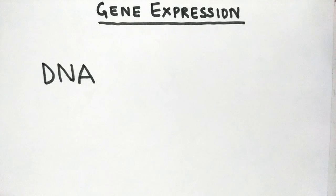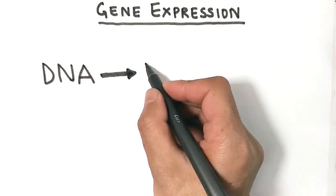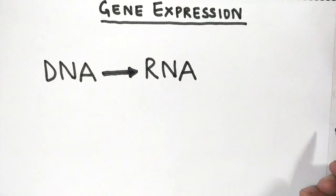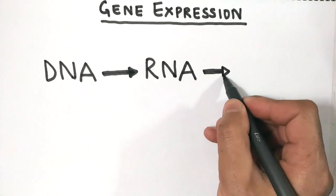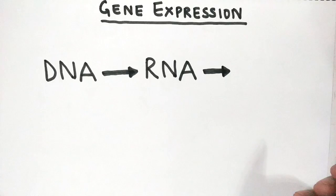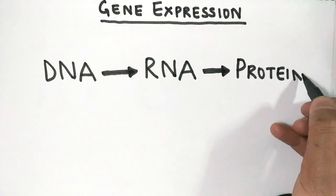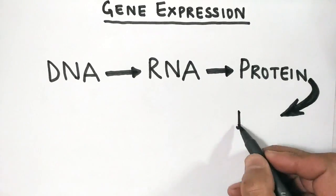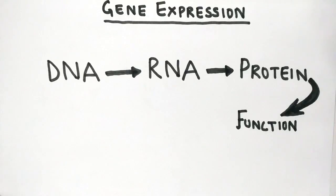This information present on DNA gets transferred to a molecule called RNA through a process called transcription, which we are going to discuss later. This RNA cannot function itself, so it translates information into a product called protein, and it is this protein that describes the function and has the ability to function within an organism to give a desired function.